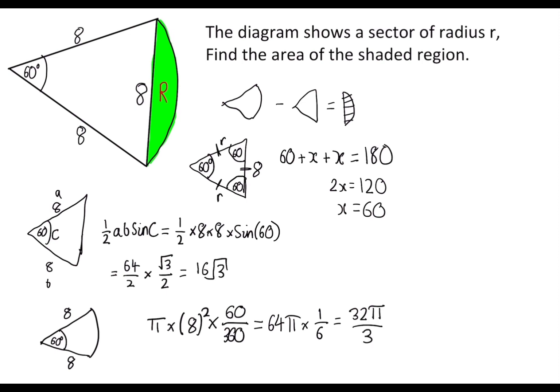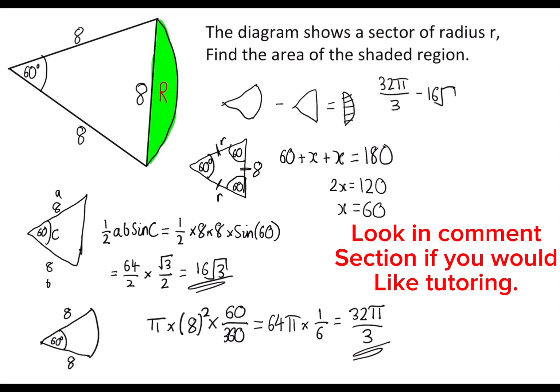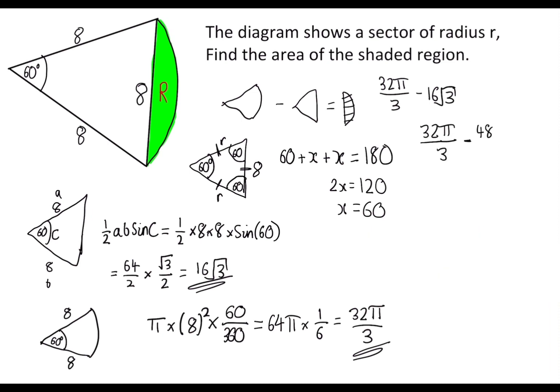Now to find the area of the shaded region, all we need to do is subtract these two from each other. Remember we said it's the area of the sector take away from the triangle. So we do 32 pi over 3 minus 16 root 3. We can times the top and bottom by 3 of this. So we have minus 48 root 3 over 3. So our final answer, r is equal to 32 pi minus 48 root 3 over 3.